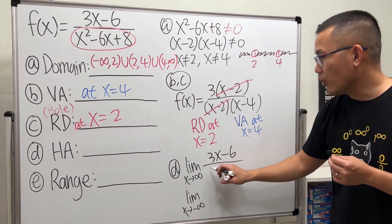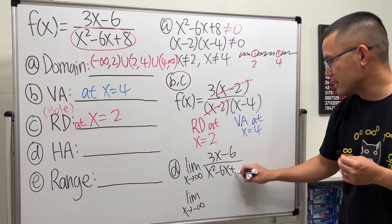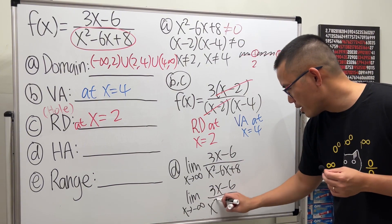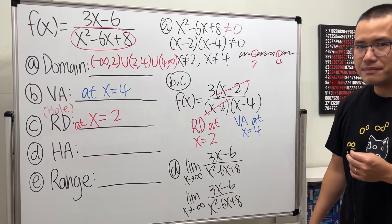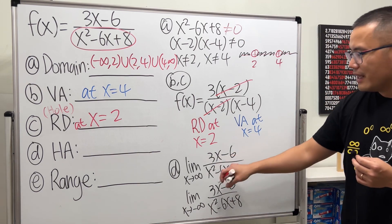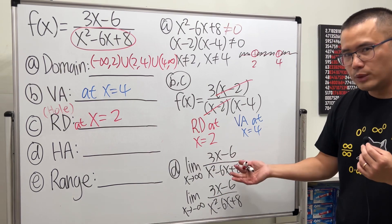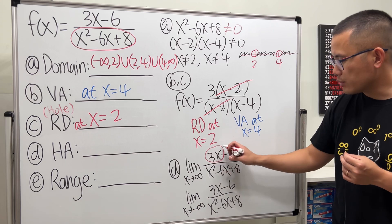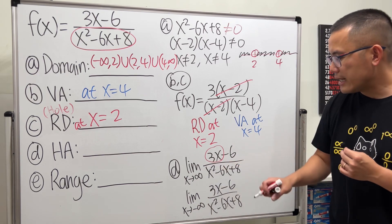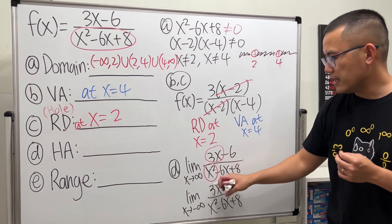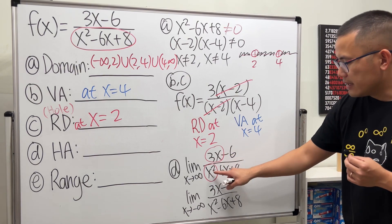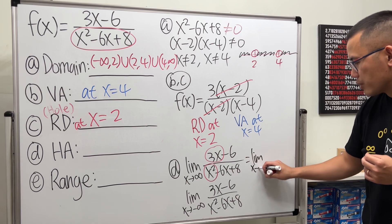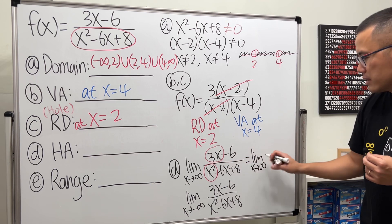3x - 6 over x² - 6x + 8. How do we do this? Well, when x is approaching infinity, the easy way to do it is just compare the highest power of x on the top, which is the 3x to the first power, and also the highest power of x on the bottom, which is x². Have a look. x and x², one of the x cancels out. So this is the limit, x approaching infinity, and we just get 3 over x. As x goes to infinity, 3 over infinity will give us 0.